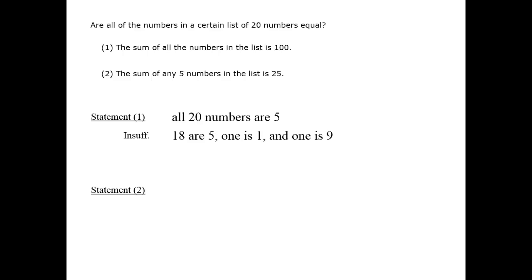Statement 2 tells us that the sum of any 5 numbers in the list is 25. The case that we just considered, with a 9 and a 1 on the list, would no longer be allowed, because selecting them as part of the any 5 would not give a sum of 25.